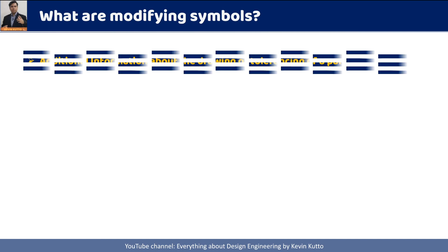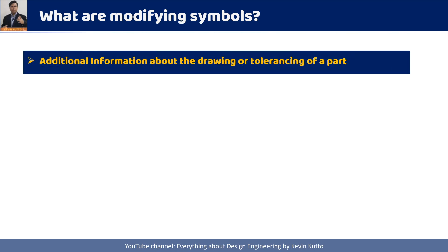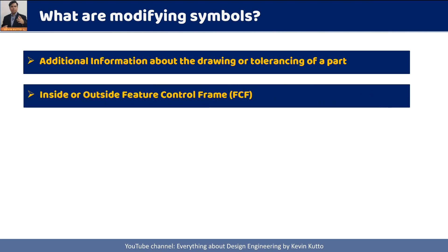What are modifying symbols? Modifying symbols are those symbols which provide additional information about the drawing and tolerance of the part. Some modifiers are specifically placed inside the feature control frame, some are specifically placed outside, and there is a third category which can be placed either inside or outside the feature control frame.